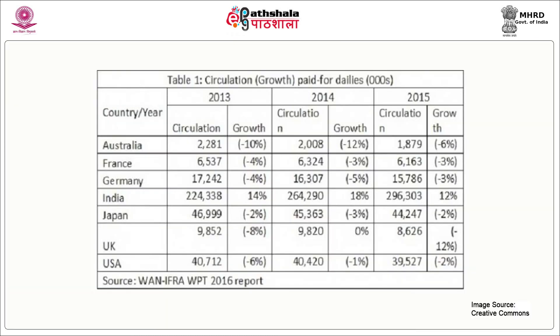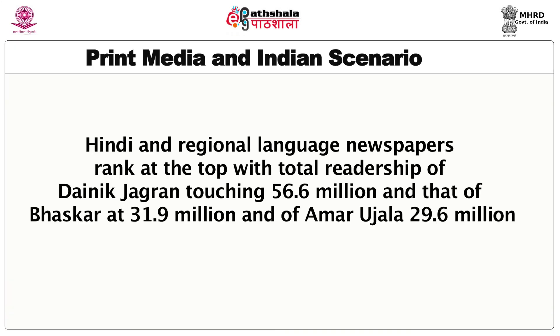The WAN-IFRA World Press Trends 2016 report, published by the World Association of Newspapers and News Publishers, found that the USA, Germany, France, Japan, Australia and Britain showed paid print circulation yearly drops of up to 12% in some cases, while India witnessed 14%, 18% and 12% growth in the years 2013, 2014 and 2015 respectively. With regard to the number of paid dailies in circulation, while the other six countries showed stagnation, India saw the number grow by as many as 2,000 titles.